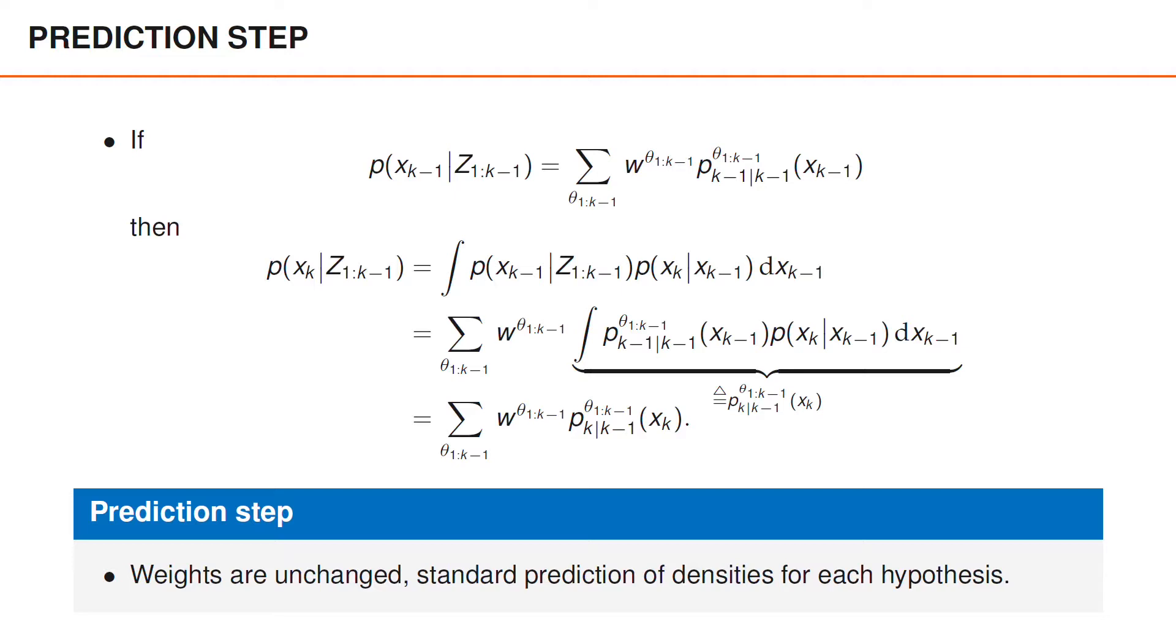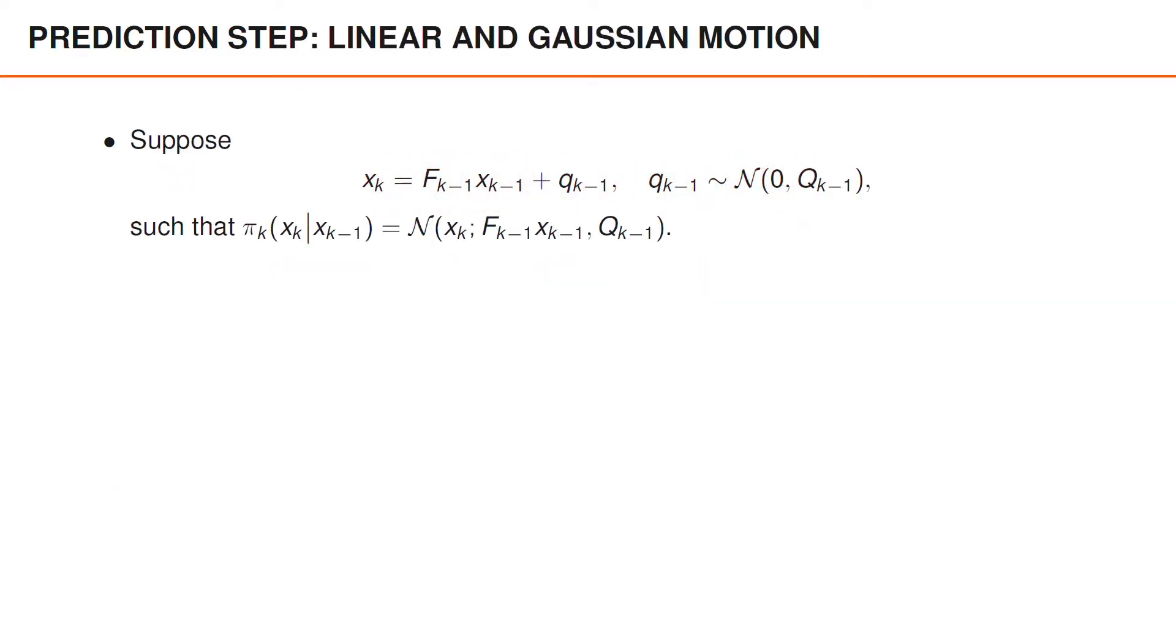Suppose the motion model is linear and Gaussian, such that pi_k of x_k given x_{k-1} is a Gaussian density with mean F times x_{k-1} and covariance Q evaluated at x_k. If the posterior density at time k-1, given a data association sequence theta_{1:k-1} is also Gaussian, then the predicted density under that hypothesis is given by the prediction step in a regular Kalman filter. That is, the predicted mean is F times the previous mean, whereas the predicted covariance is FPF^T plus Q.